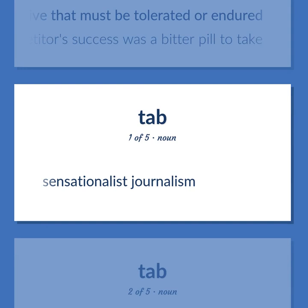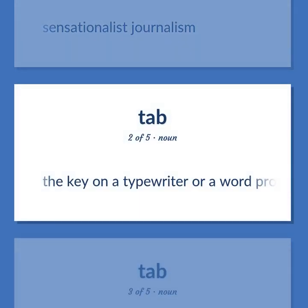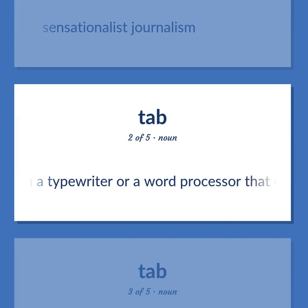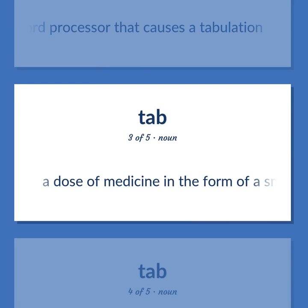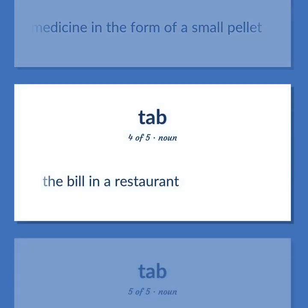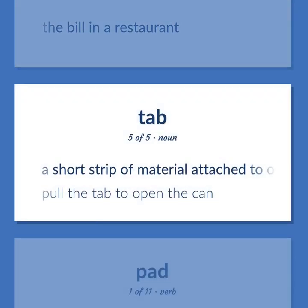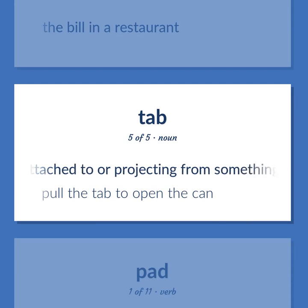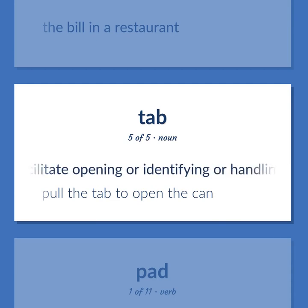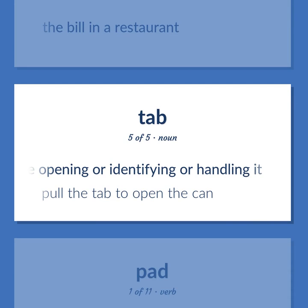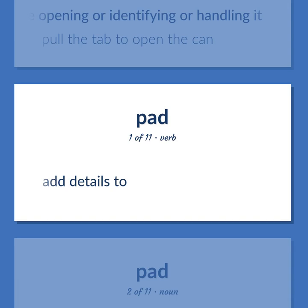Sensationalist journalism. Tab: the key on a typewriter or word processor that causes a tabulation. The bill in a restaurant. A short strip of material attached to or projecting from something in order to facilitate opening, identifying, or handling it. Pull the tab to open the can. Add details to.